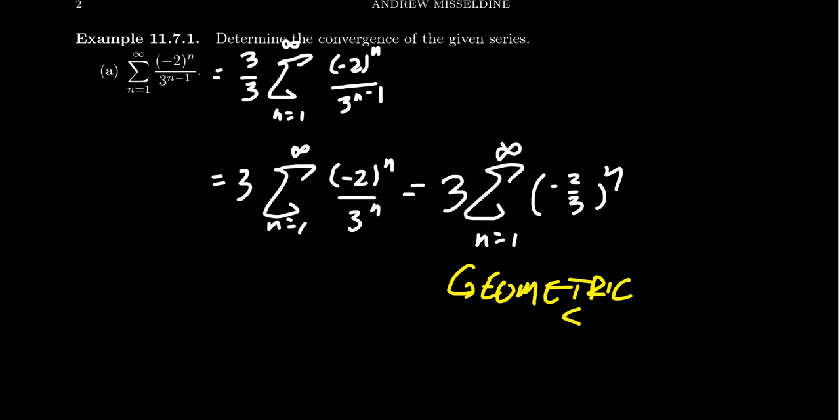It's a geometric series. And the convergence of a geometric series comes entirely from its constant ratio right here. We see that r is going to equal negative 2 thirds. And a geometric series is convergent exactly when its ratio is small. That is, the absolute value of r is strictly less than 1, which it is in this case.